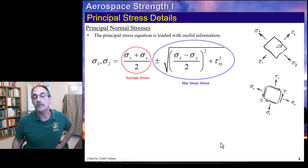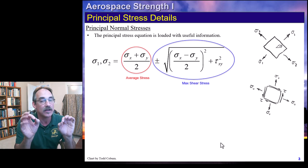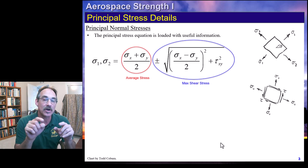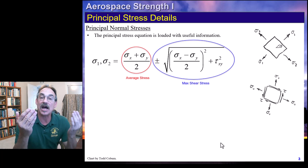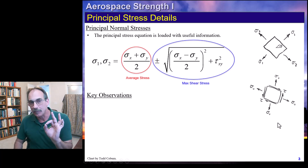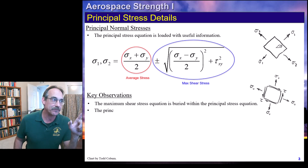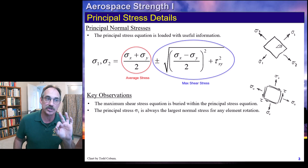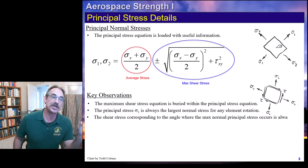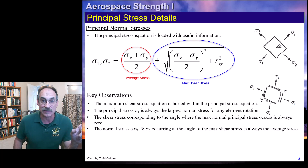So we find a wealth of information here — and these same terms, this principal stress equation, this average and max, will also be quite useful next lecture when we get to Mohr's circle. Let's make a couple observations: the max shear stress equation is buried in our principal stress equation; sigma 1 is always the largest normal stress for any element rotation; the shear stress at the angle where max normal stress occurs is always zero; and the normal stresses at the angle of max shear stress are always equal to the average stress.